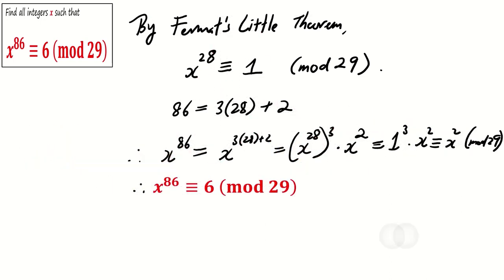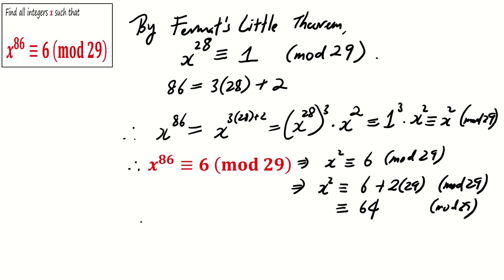This means that x^86 ≡ 6 (mod 29) is equivalent to x^2 ≡ 6 (mod 29). Note that 6 can be written as 6 + 2(29) = 64 (mod 29). So x^2 ≡ 64 (mod 29), and therefore x^2 - 64 ≡ (x+8)(x-8) ≡ 0 (mod 29).